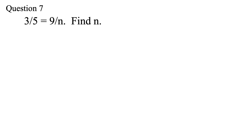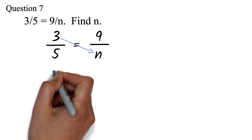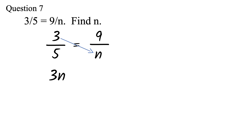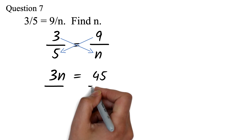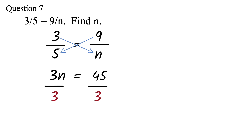Question 7: 3 over 5 equals 9 over n. Find n. This is a typical proportion setup. We will first cross multiply. 3 times n is 3n, and 9 times 5 is 45. We divide both sides by 3 — the 3 cancels out, and 45 divided by 3 is 15. So n equals 15.